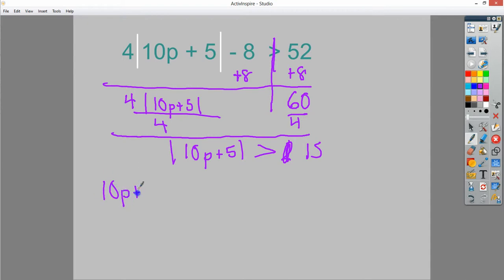10p plus 5 is greater than 15, or 10p plus 5 is less than negative 15. And remember, this keeps the 10p plus 5 still the same exact thing, making it absolute, until the very last point where we have to move and find out what the value for p happens to be.